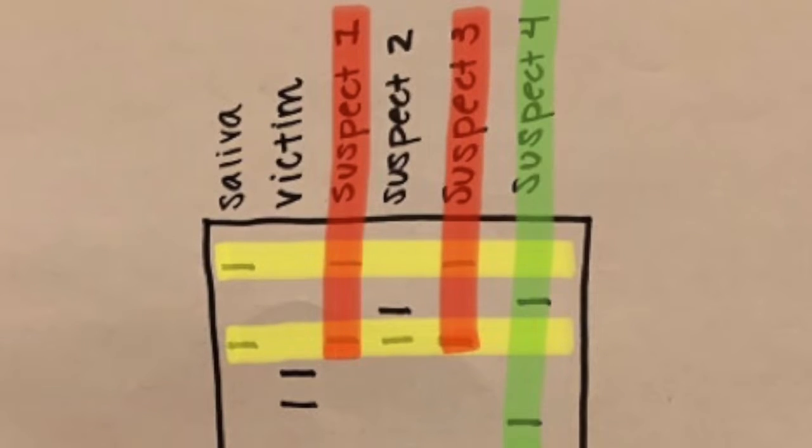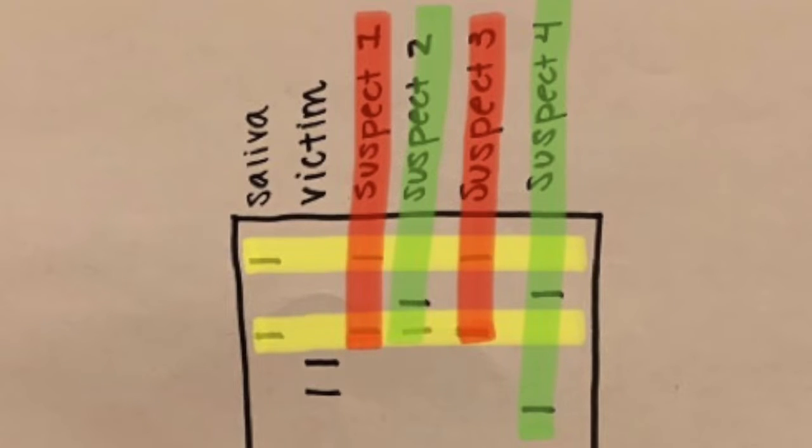At locus 1, Suspect 4 does not match any bands with saliva, so we know they did not do it. Suspect 2 only shares one band with saliva, but they have different top bands. It has to be a complete match, so Suspect 2 is not the one who did it.